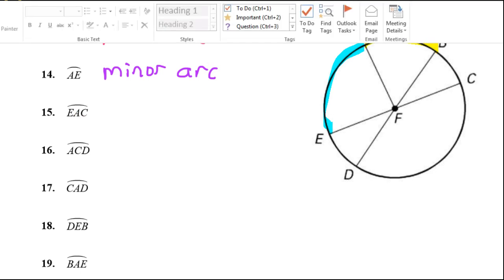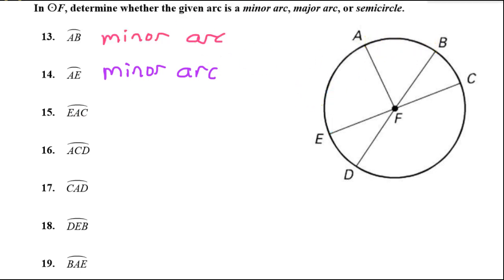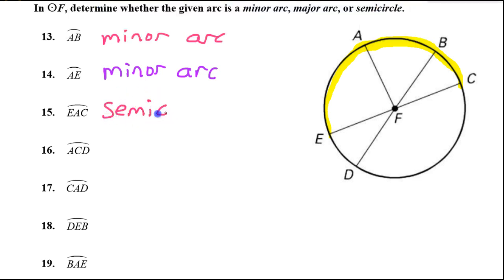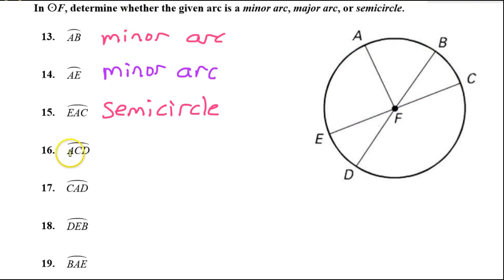Let's talk about arc EAC. Arc EAC goes from E to A to C in that order. Hopefully you can see that is a semicircle — it's a half circle. You can tell because there's a diameter right here that makes this half a semicircle. What about arc ACD? From A through C before arriving at D — that is a major arc. Clearly it is greater than 180 degrees.